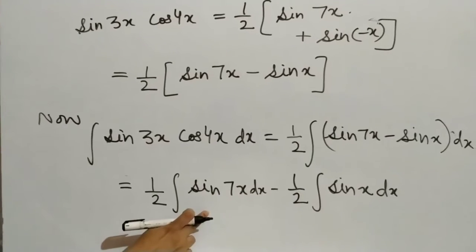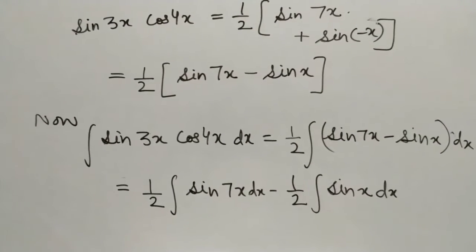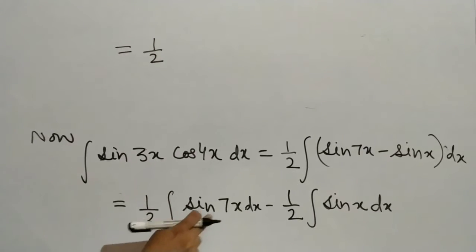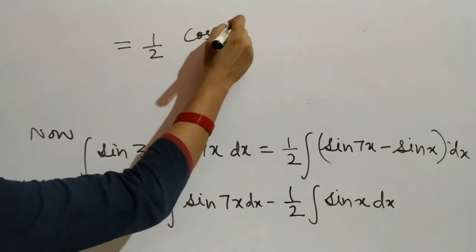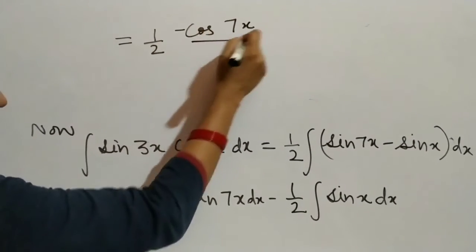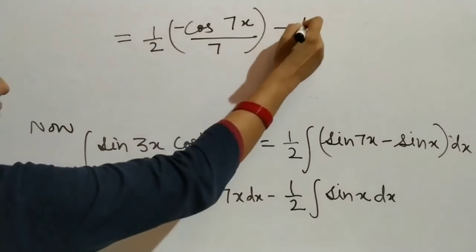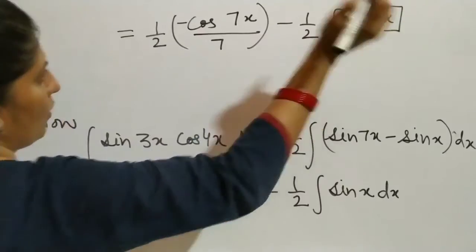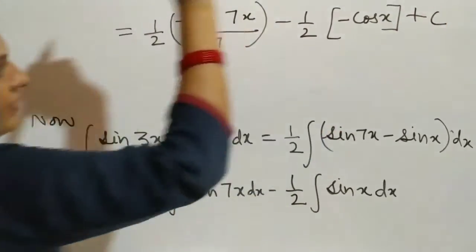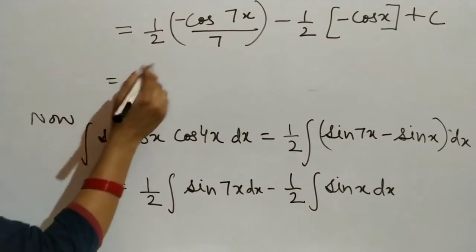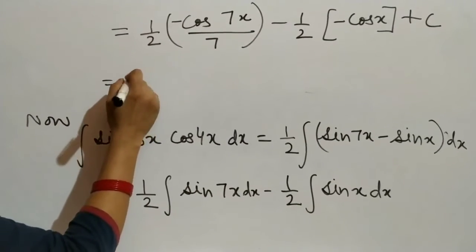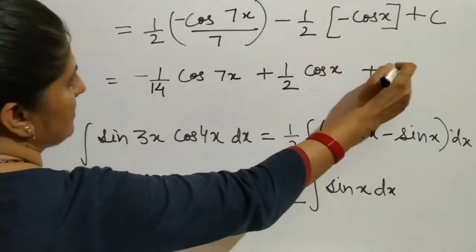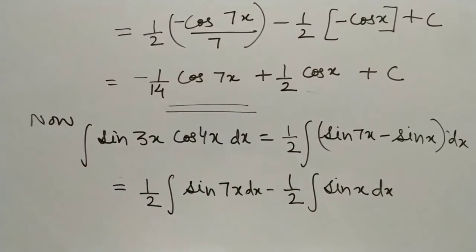Now use the formula for integration of the sine function. We know that integral of sin 7x with respect to x is equal to minus cos 7x over 7, and the integral of sin x with respect to x is equal to minus cos x. Simplifying, we get minus 1 by 14 cos 7x plus 1 by 2 cos x plus c, where c is the constant of integration. This is the integral of the given function.